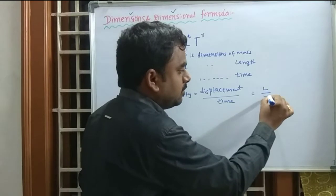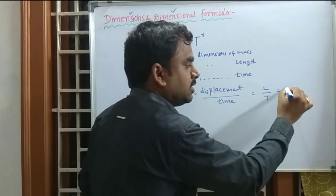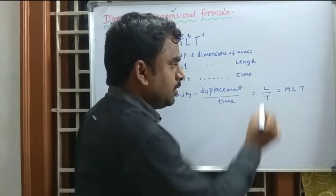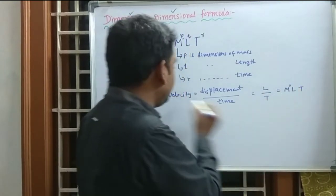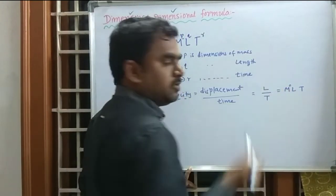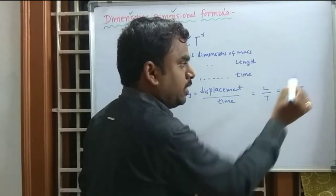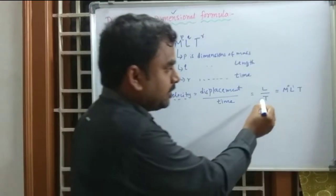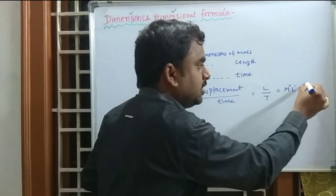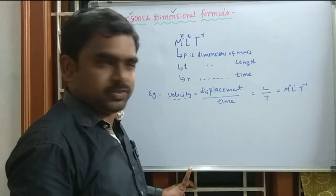Time has the dimension T. So the dimensional formula for velocity is M⁰ L¹ T⁻¹. M power 0 because velocity has no relation to mass. Length appears once in the numerator, and time is in the denominator, so T becomes T power minus 1.